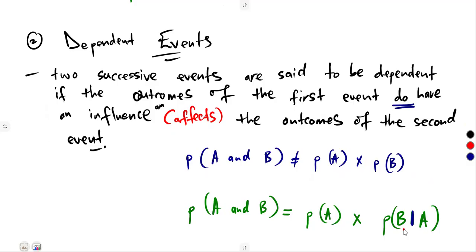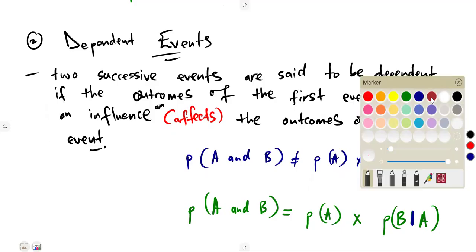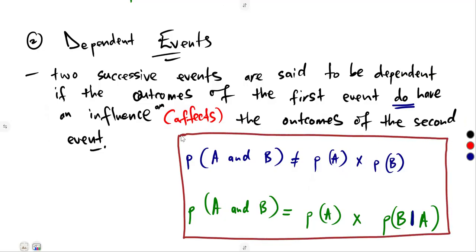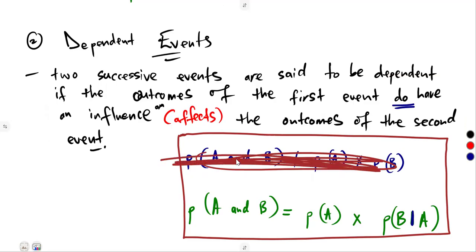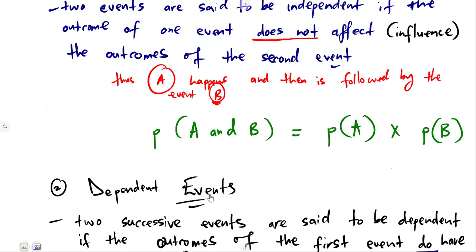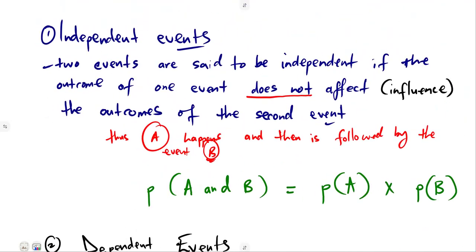The probability of B provided that A has occurred — that is the case for dependent events. So this is what we need. In terms of testing: when P(A and B) does not equal P(A) × P(B), therefore they are dependent. If they are exactly the same, you conclude they are independent events.